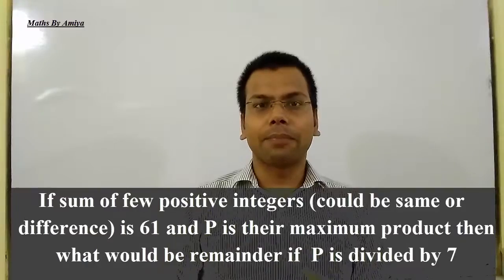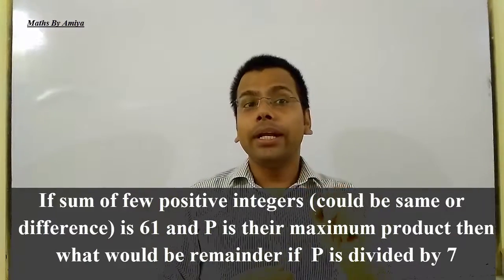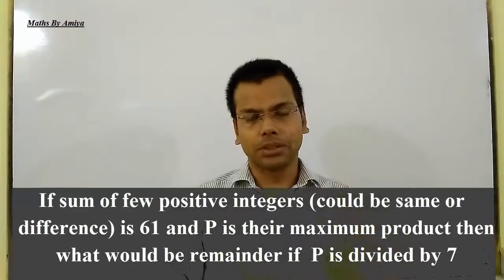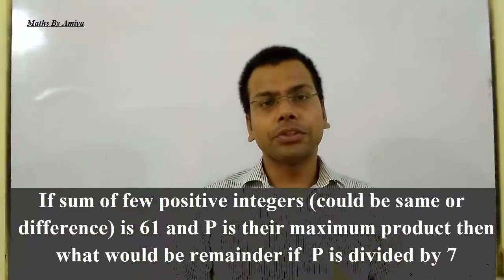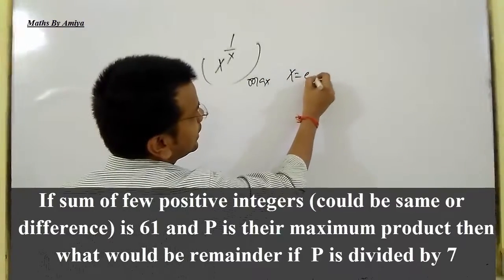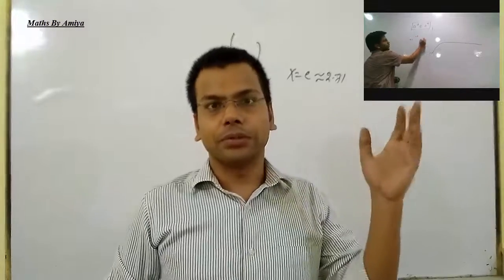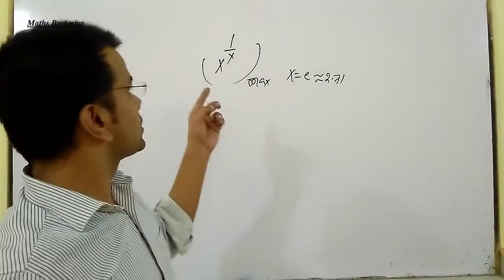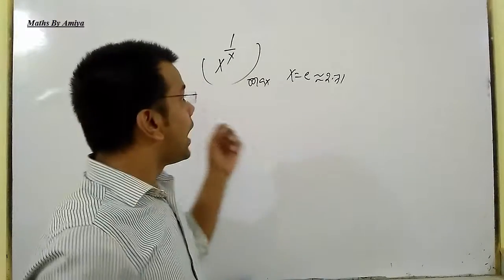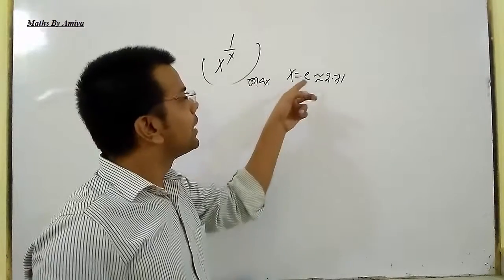In this type of question, either we can apply AM-GM or Cauchy-Schwarz. But for those two, we should know how many integers we have. Here we do not know how many numbers we have — we have few numbers and we are looking for the product. So the first concept we should know is: x raised to power 1/x will be maximum when the value of x is e, approximately 2.71.